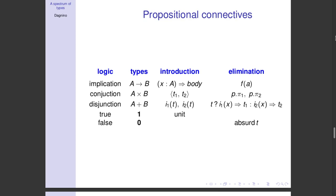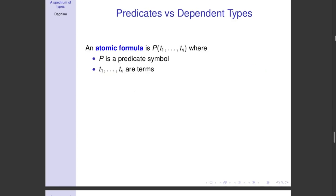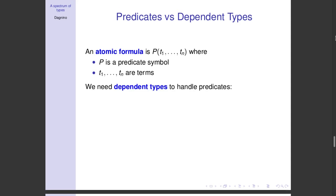Coming back to the starting example, to write preconditions we need predicates — predicate logic. Propositional logic alone is not enough; we cannot write predicates. Predicates are predicate symbols applied to terms, and to see this as a type, we need a type which depends on terms. Luca mentioned something about this — these are called dependent types. And so, if we have a type system with dependent types, we can talk about predicate logic.